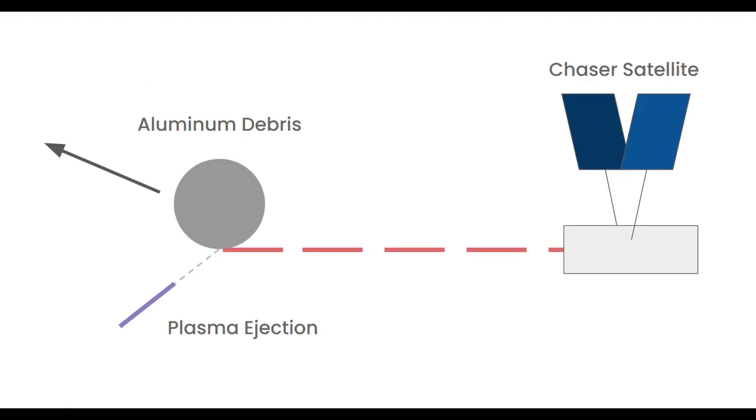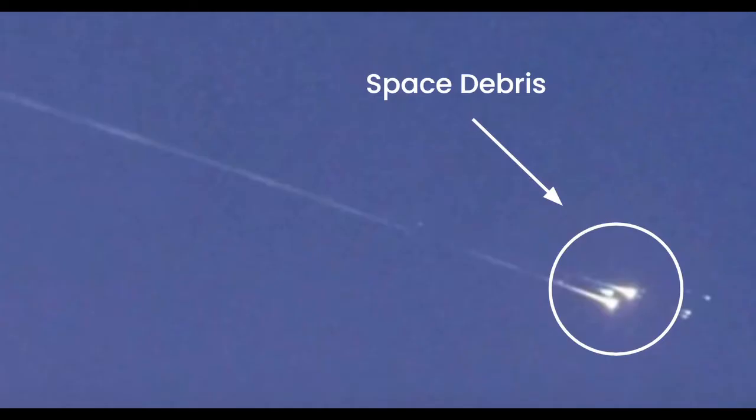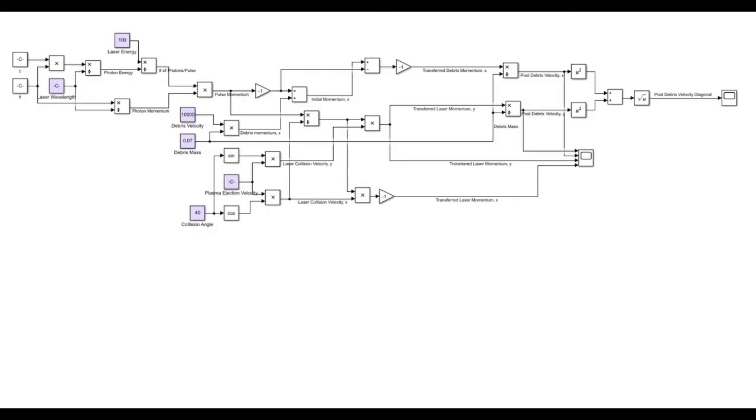Once the debris is hit by the laser many times, it'll start to slow down, and eventually, it can fall back into the Earth's atmosphere, where it'll burn up. To demonstrate this, I've created a system that models a laser debris collision. The model basically takes in different parameter inputs for the laser and debris, and outputs how much their momentum and velocity change after the collision.